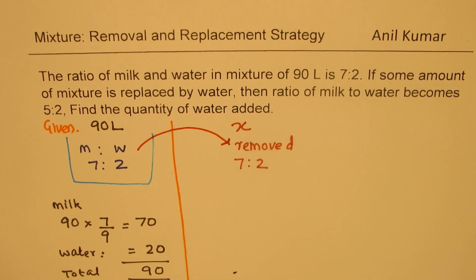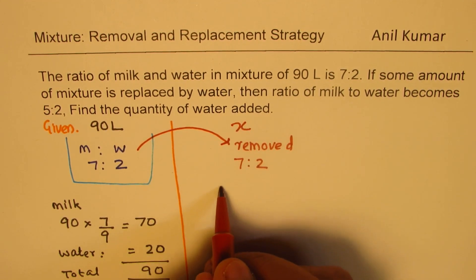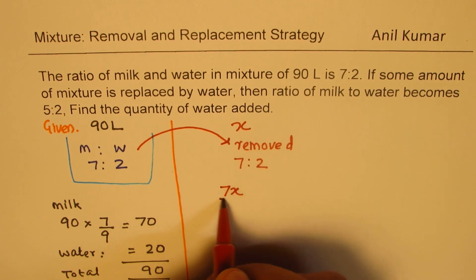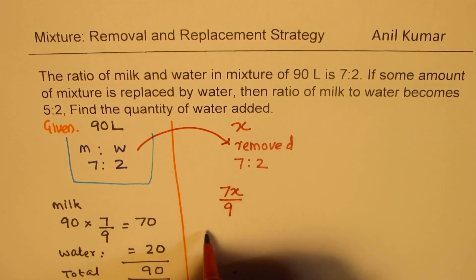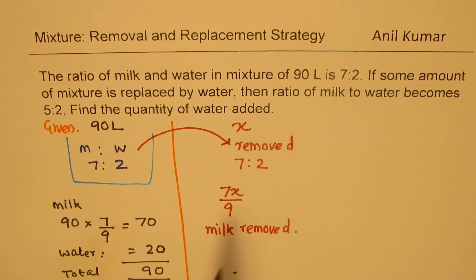So in that case, how much milk will be removed? X times 7 out of 9. So we have 7x over 9 will be milk removed. So if I remove x quantity, then the milk removed will be 7x over 9.